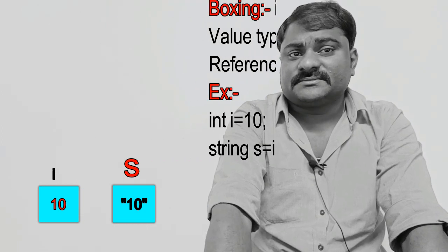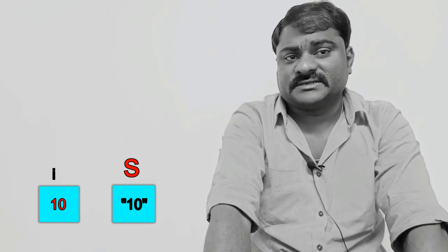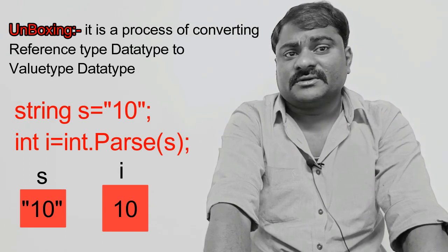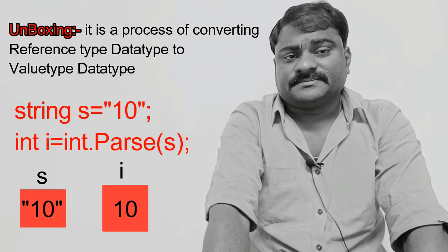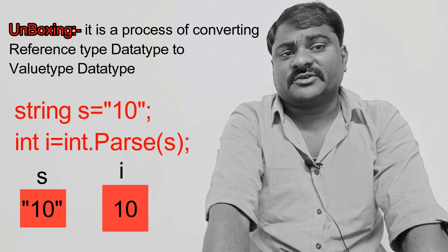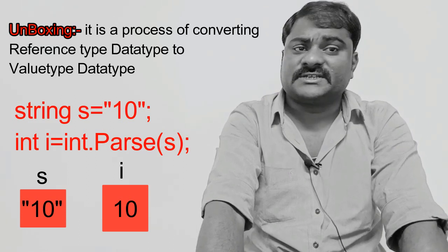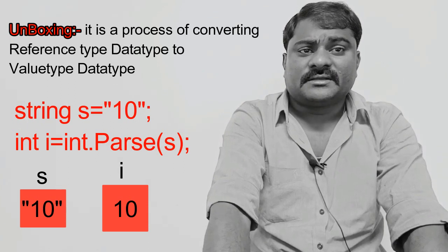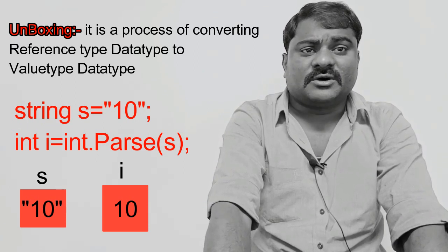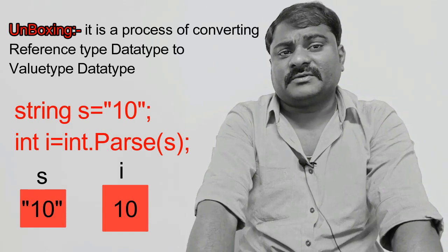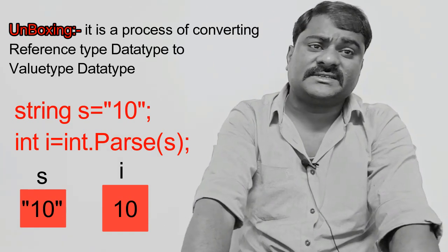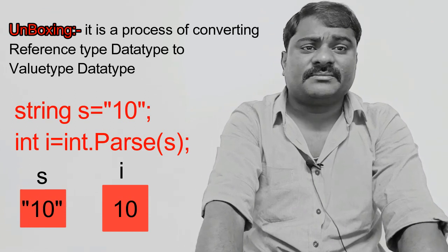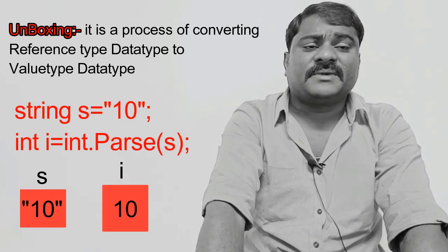What is unboxing? It is a process of converting reference type data type to value type data type. So if you want to convert string to any data type — for example string to int, string to float, string to double — then you have to use unboxing. Unboxing also requires explicit typecasting. If you want to convert string to any data type, you have to use the datatype.Parse() method.